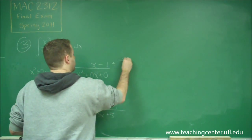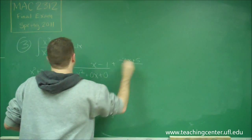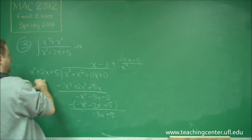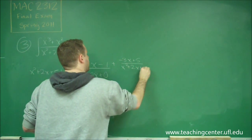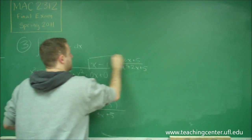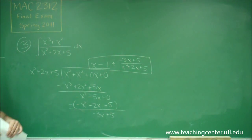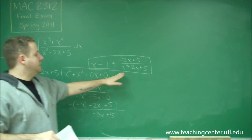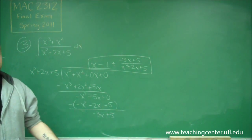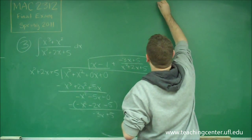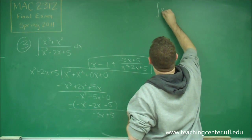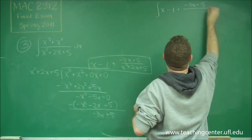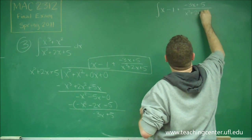What we get at the end is minus 3x plus 5, and now we're down to a term with a lower degree than what we're dividing by, so that's our remainder. So we have a remainder of negative 3x plus 5 all over our original divisor, x squared plus 2x plus 5. So now we have the integral of x minus 1 plus negative 3x plus 5 all over x squared plus 2x plus 5.